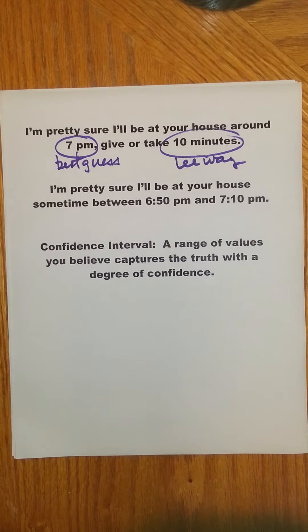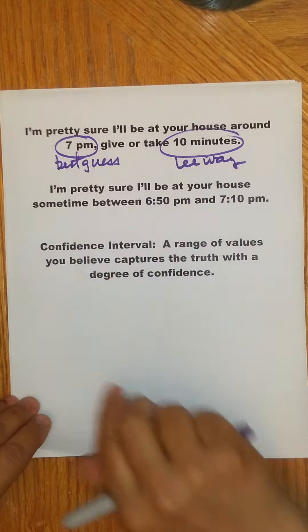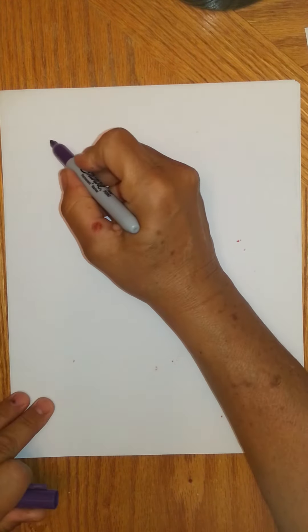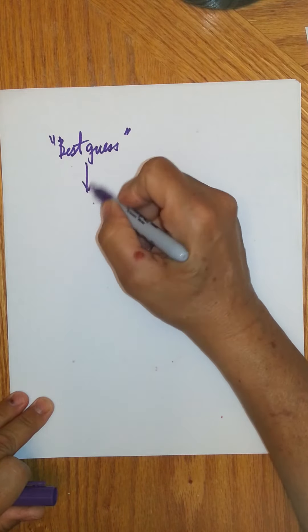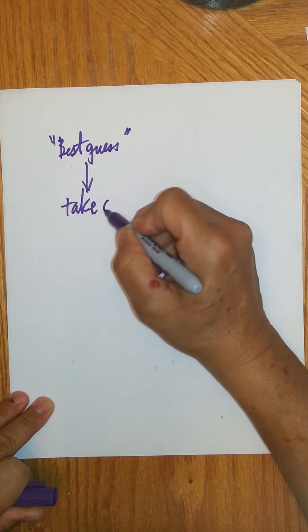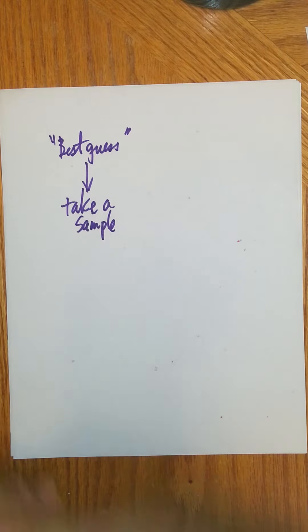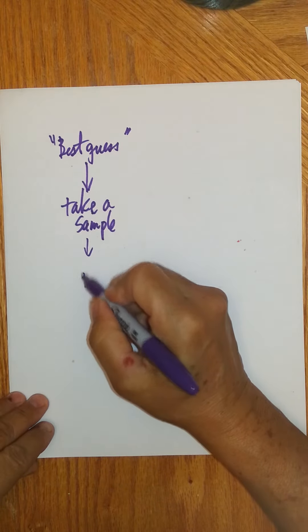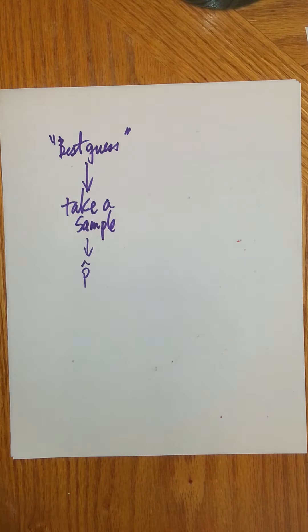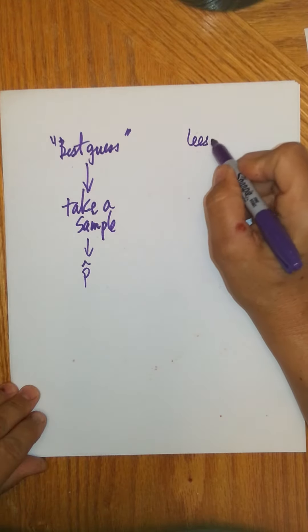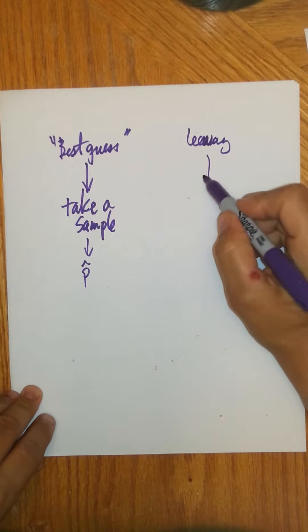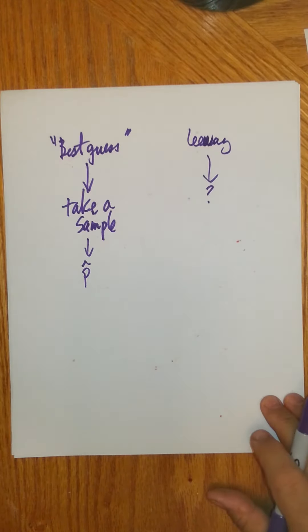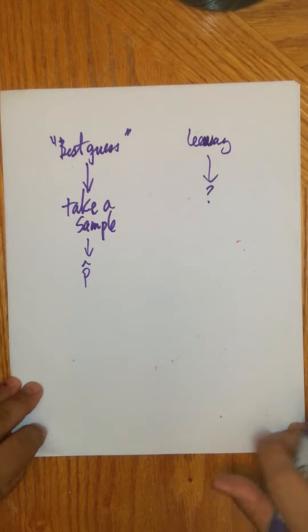So in statistics, when we come up with a confidence interval, we basically do this exact same thing. Except that our best guess is a little bit better than a best guess. Our best guess is when we take a sample, obviously taking a sample correctly. Now since we're dealing with yes-no traits, that's going to be p-hat. And then how do we come up with our leeway? Well, that's where the theory of statistics comes into play.